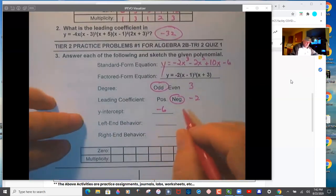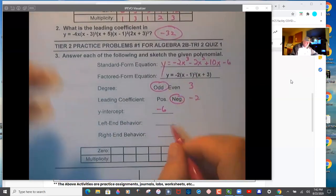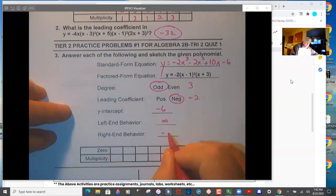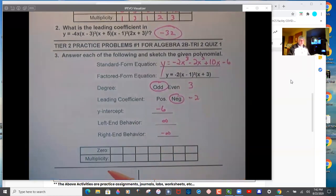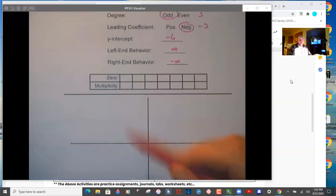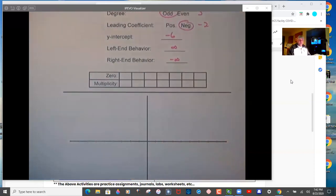And then left end behavior, this is an odd negative. So we'll have infinity and negative infinity. So it's going to be up here, I'm going to do some stuff and then come down on the right.